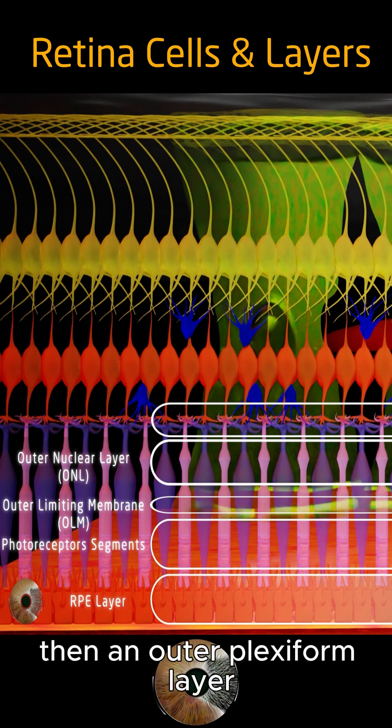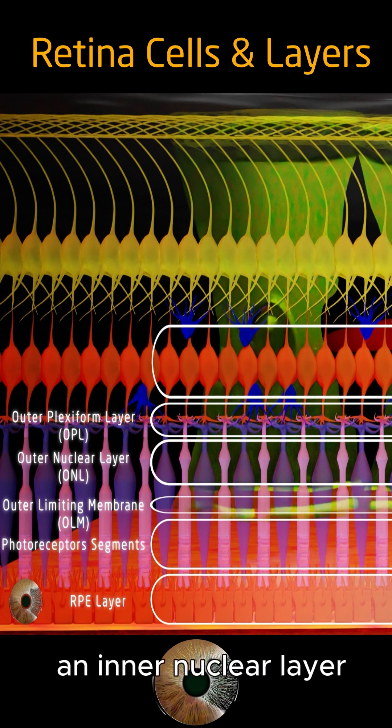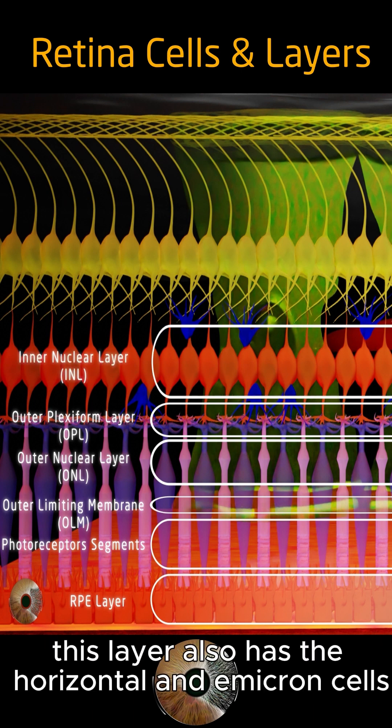Then an outer plexiform layer between the photoreceptors and bipolar cells. An inner nuclear layer is formed by the nucleus of bipolar cells. This layer also has the horizontal and amacrine cells.